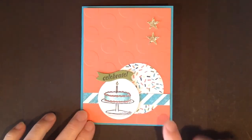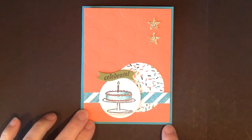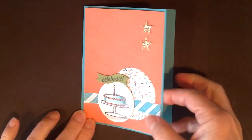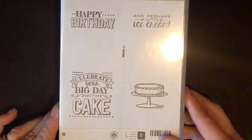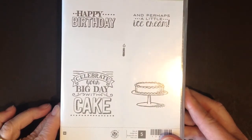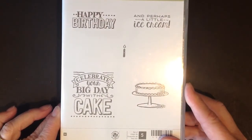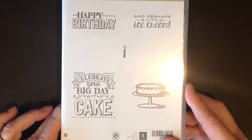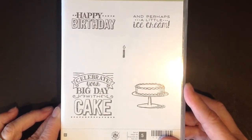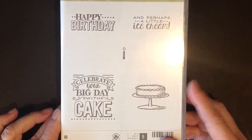Today I want to show you a quick tip on how to use your aqua painters to color this little birthday cake on the card that I stamped. I'm going to be using the Big Day stamp set, which is one of the free celebrations items. If you don't know about celebrations, it goes until the end of March 2015. This is one of the sets that's available free with a $50 order, so you might want to check out that special.